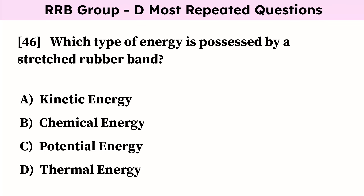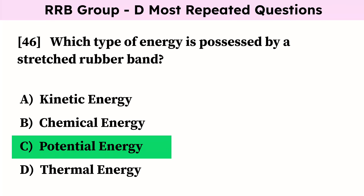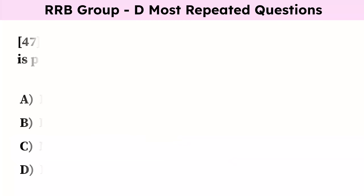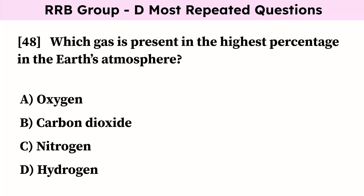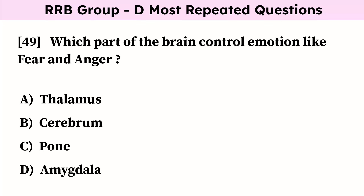Which type of energy is possessed by a stretched rubber band? Correct answer is potential energy. Which law states that the extension of a spring is proportional to the applied force? Correct answer is Hooke's law. Which gas is present in the highest percentage in the earth's atmosphere? Correct answer is nitrogen. Which part of the brain controls emotions like fear and anger? Correct answer is amygdala.